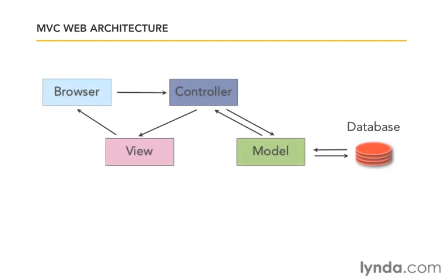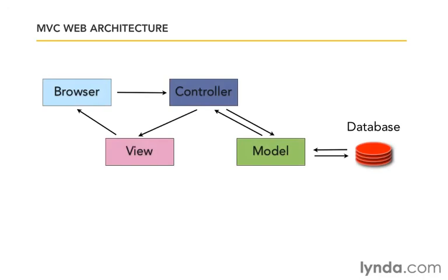Let's begin by reviewing the MVC architecture diagram again. In the beginning, we learned how to work with controllers and views to create dynamic pages and return them to the browser. After that, we shifted our focus and learned to interact with the database by creating models and associations. We worked with those not from a browser, but via the Rails console.